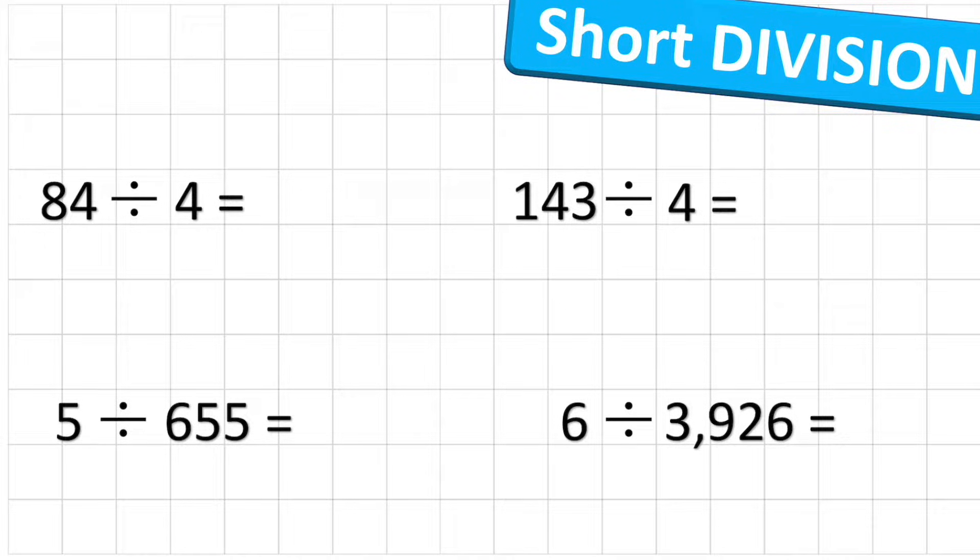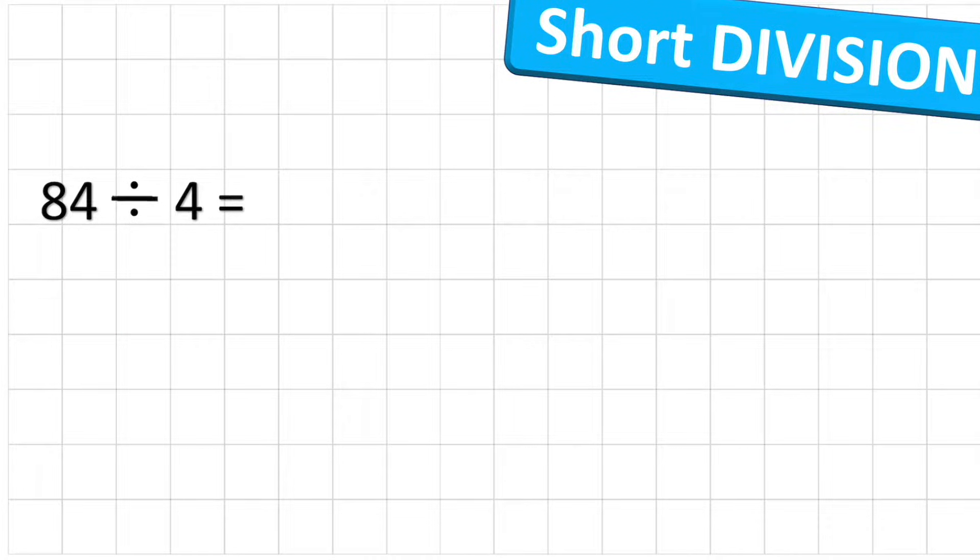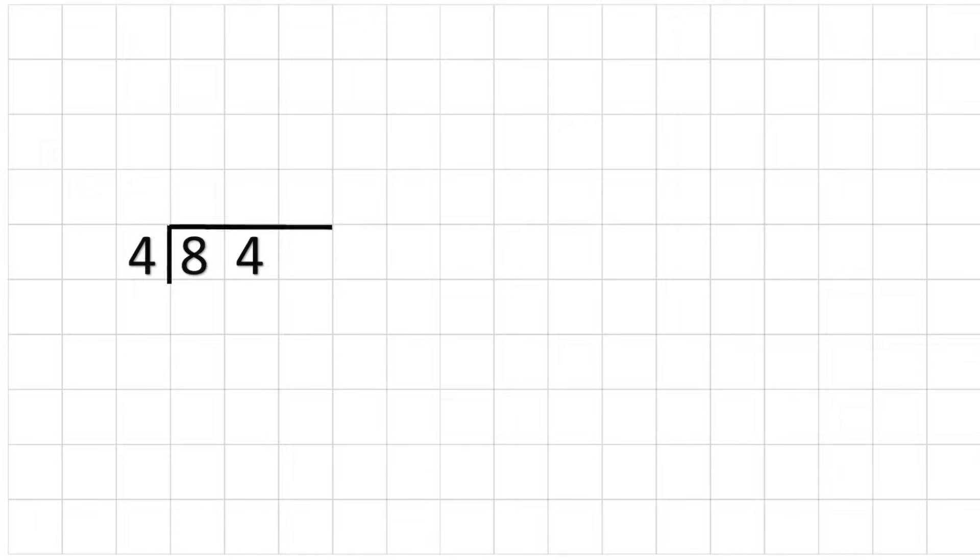So here we go, let's start with this question here. We've got 84 divided by 4. The first thing we're going to need to do is turn our 84 divided by 4 into the bus stop method, which means that we are going to put our divisor on the outside and our dividend inside the bus stop.